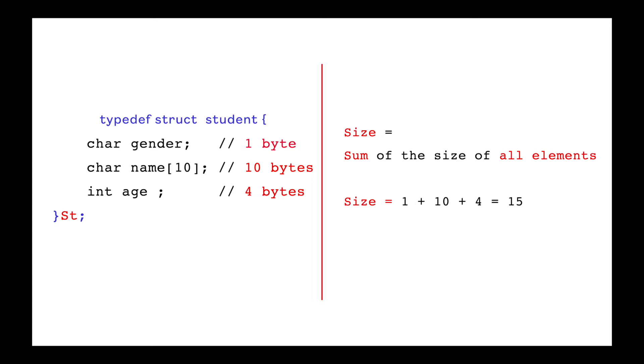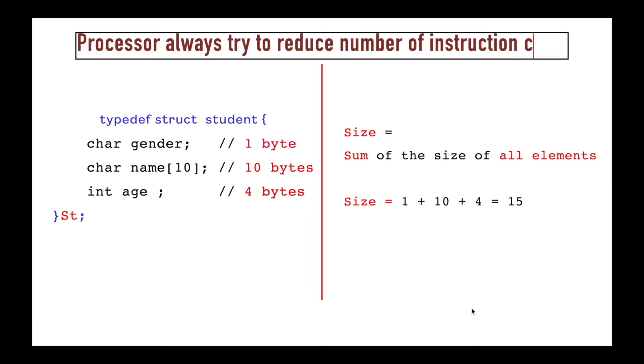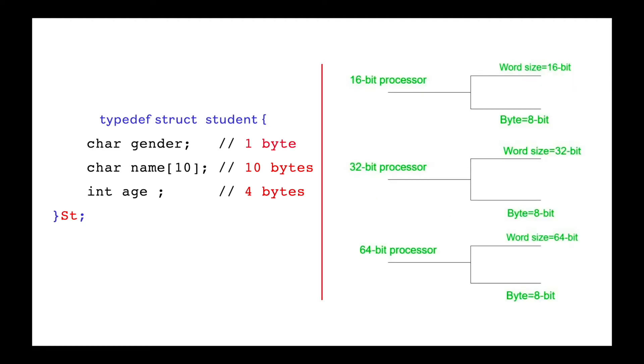But it is not in real. This is because processor always try to reduce the number of instruction cycle for any operation. Let's understood in detail with this example by considering 32-bit processor. 32-bit processor means in one instruction cycle it can fetch 32-bit data from the memory. So 4 bytes can be fetched in one instruction cycle.